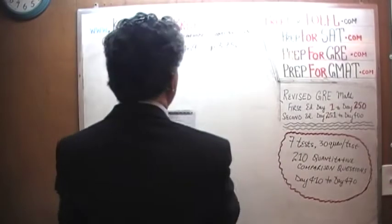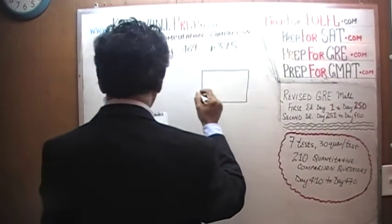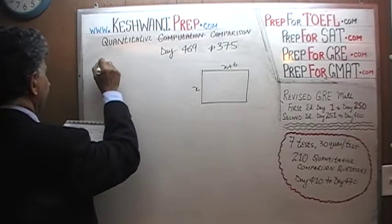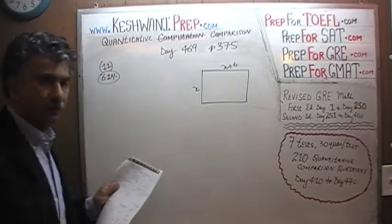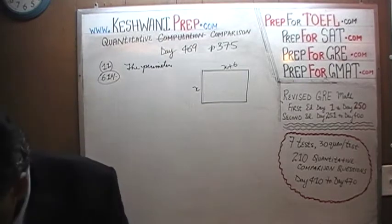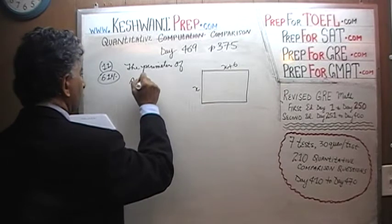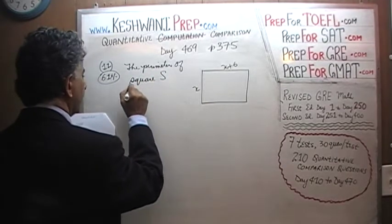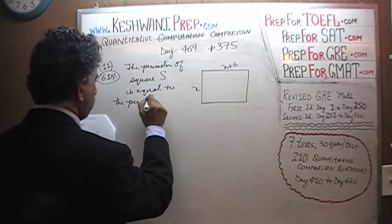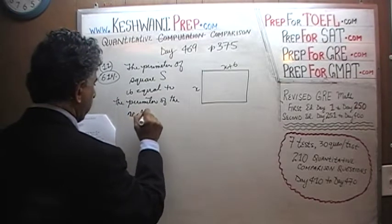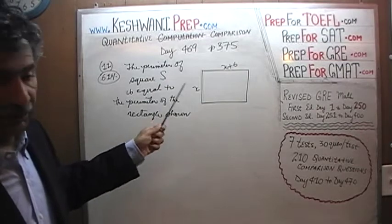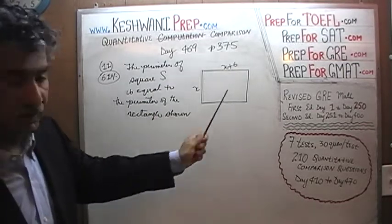We are told that one side of the rectangle is x, and the other side is x plus 6. We are told that the perimeter of square S is equal to the perimeter of the rectangle shown.